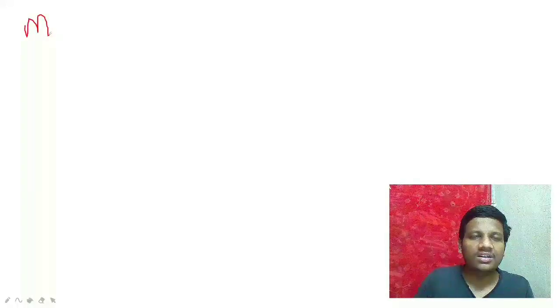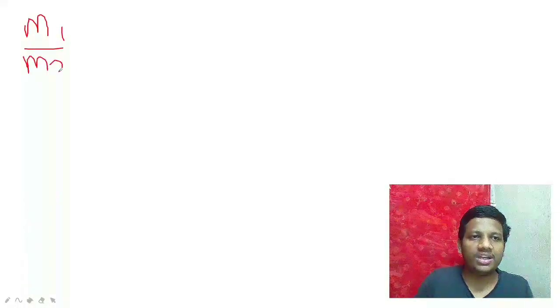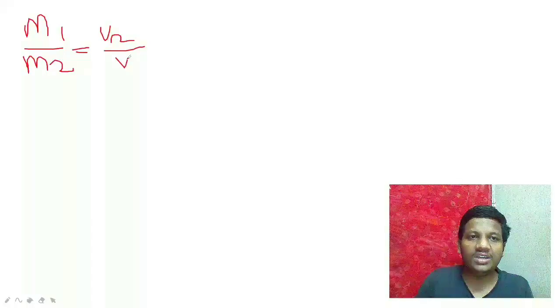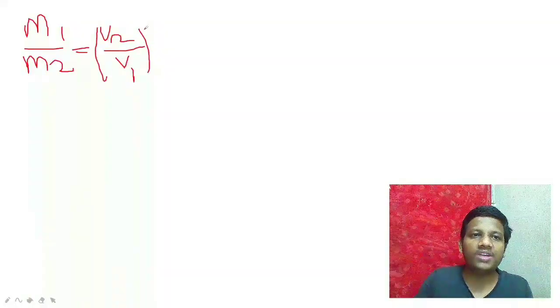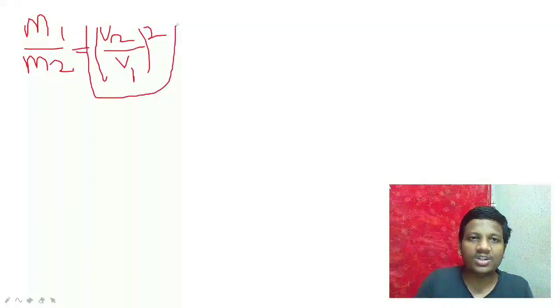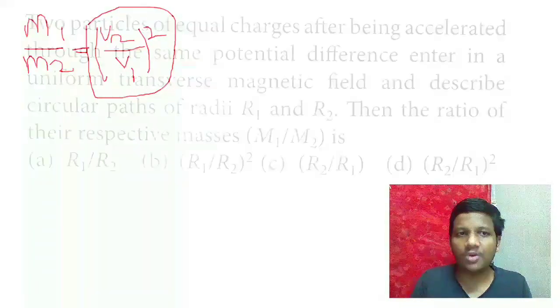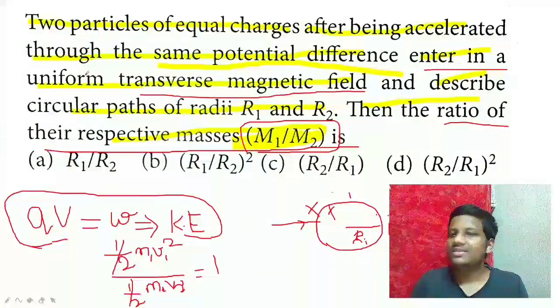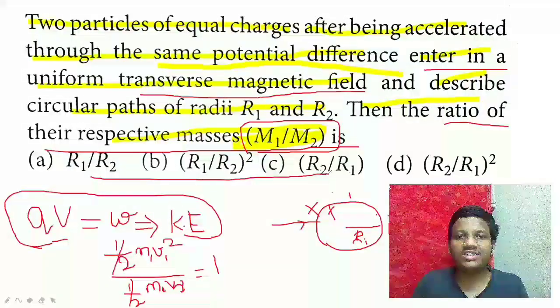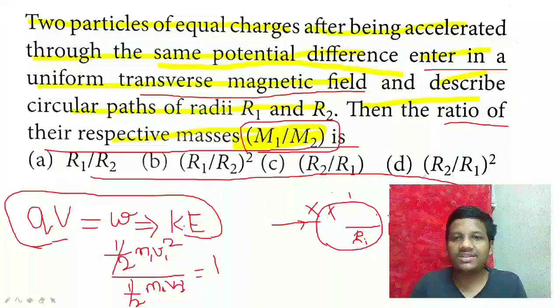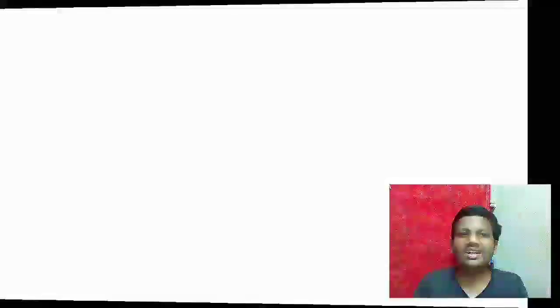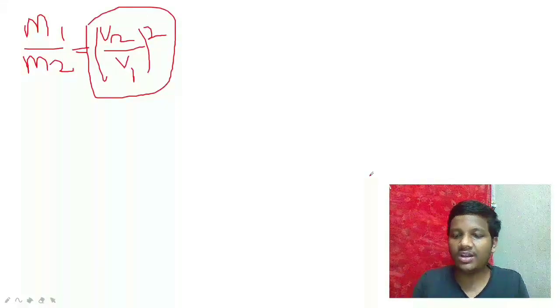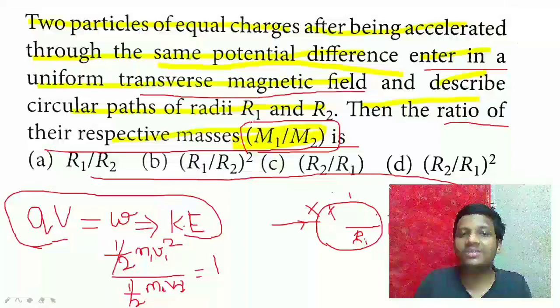We need to calculate M1 by M2. Rearranging: M1 divided by M2 equals M2V2 squared divided by M1V1 squared. Simplifying: M1 by M2 equals V2 by V1 the whole squared. Now we need to complete the solution, but they have given us radius in the options, not velocity. So I have to change my final answer to use radius.